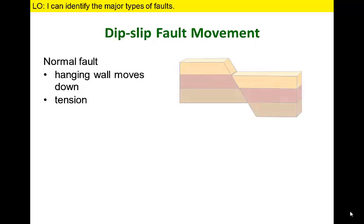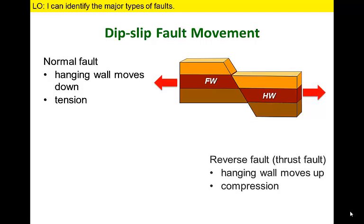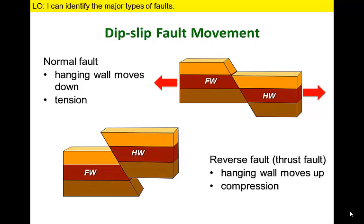Geologists label a fault as a dip-slip fault if the hanging wall moves up or down the fault surface parallel to the dip direction. Normal faults form when the hanging wall moves down relative to the foot wall. Reverse faults form when the hanging wall moves up relative to the foot wall. Normal faults form under tension, where rocks move apart or diverge, similar to conditions found along oceanic ridges. Reverse faults form under compression, conditions characteristic of convergent plate boundaries.